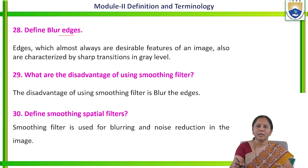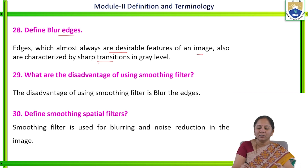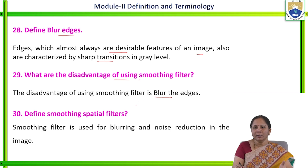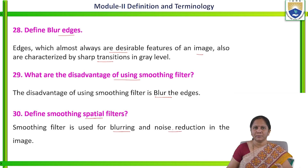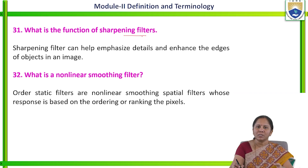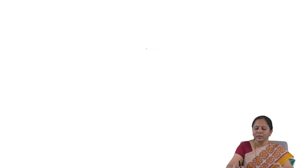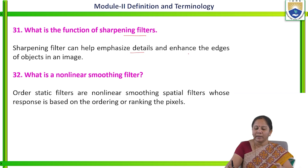Define blur edges: edges, which almost always are desirable features of an image, are characterized by sharp transitions in gray levels. What are the disadvantages of using a smoothing filter? If we use a smoothing filter, the image can be blurred. Define smoothing spatial filter: it is used for blurring and also for noise reduction in the image. What is the function of sharpening filters? Sharpening filters help to emphasize details and enhance the edges of the image.